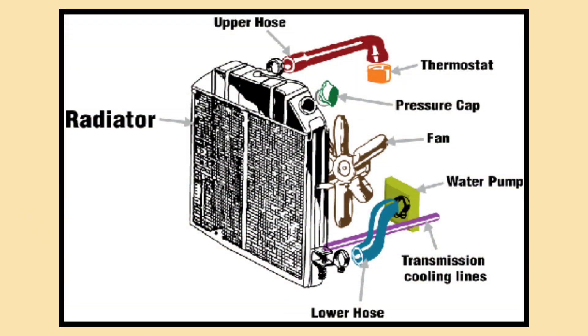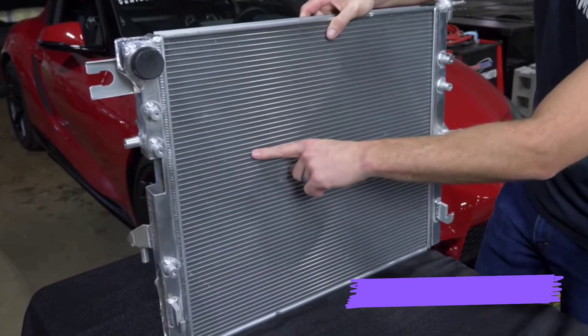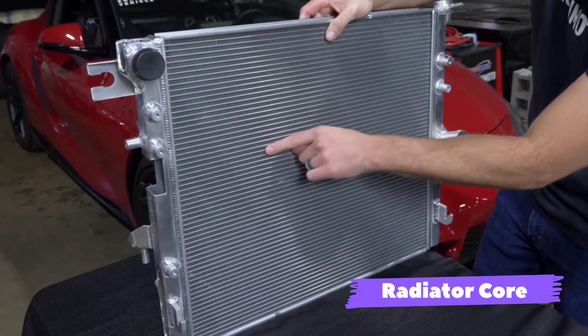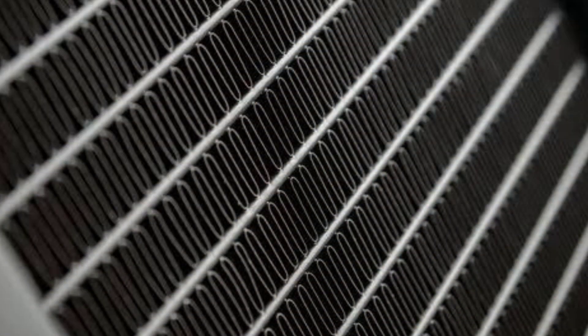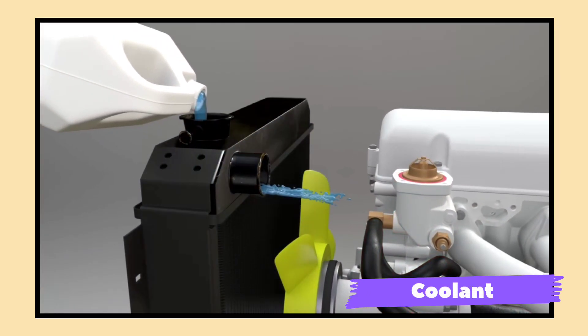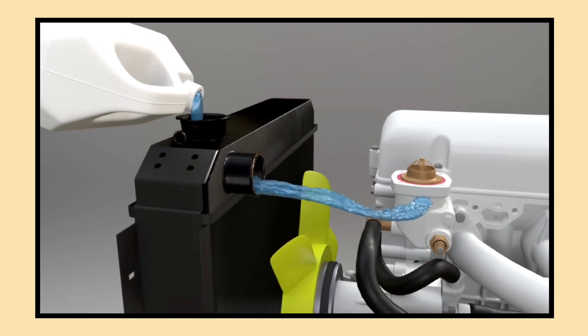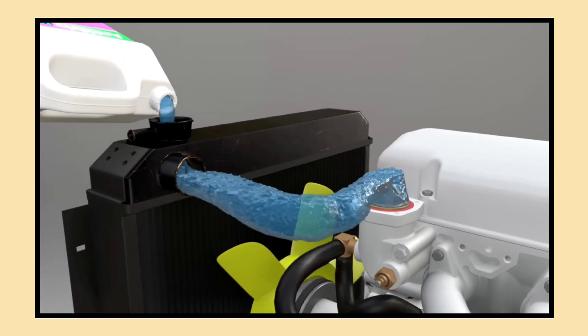Let's start with the basic components of a radiator. The main parts include the radiator core, which is where the heat exchange happens. It consists of numerous tubes and fins designed to maximize the surface area for cooling. Then there's the coolant, a mixture of water and antifreeze that circulates through the engine and radiator.